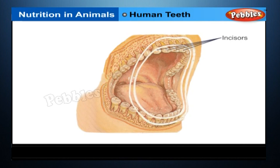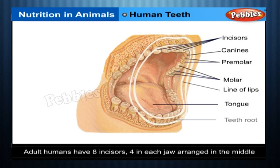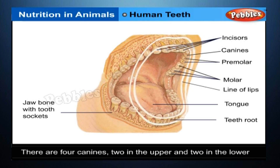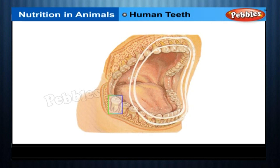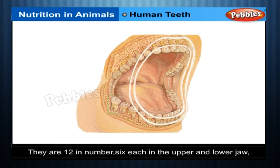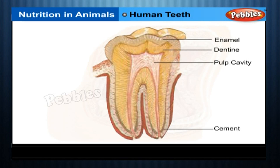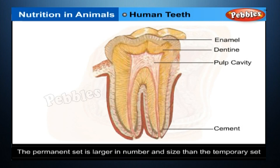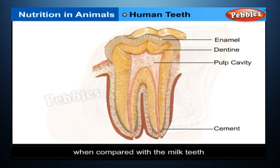The Permanent Set. There are 32 teeth in a permanent set, 16 in each jaw. Adult humans have 8 incisors — 4 in each jaw arranged in the middle. There are 4 canines, 2 in the upper and 2 in the lower jaw. Behind the canines are the premolars, 4 in each jaw, 2 on the left and 2 on the right. The molars are found at the back of the jaws behind the premolars — 12 in number, 6 each in the upper and lower jaw, 3 on the left and 3 on the right. The permanent set is larger in number and size than the temporary set, and their enamel is thicker, though less white in appearance compared with the milk teeth.